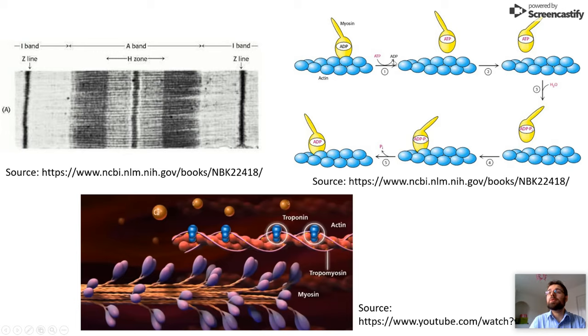The myosin head attaches to the actin, then upon exchange of ATP to ADP, that detaches. The myosin changes conformation, twists the head, and attaches to another point on the actin filament. Upon hydrolysis of ATP into ADP and free phosphate and release of this phosphate, there is another conformational change which causes the myosin head to twist back, and then the two Z-discs come together.